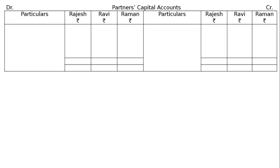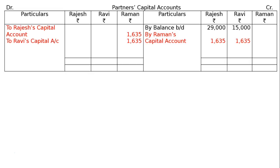Capital accounts are drawn for Rajesh, Ravi, and Raman. Opening balance brought down: Rajesh Rs. 29,000, Ravi Rs. 15,000. Goodwill treatment: Raman's Capital Account is debited to Rajesh's and Ravi's capital accounts. In Rajesh's ledger it is By Raman's Capital Account Rs. 1,635; in Ravi's ledger Rs. 1,635. In Raman's capital column the debit entry is to Rajesh's Capital Account and to Ravi's Capital Account Rs. 1,635 each.